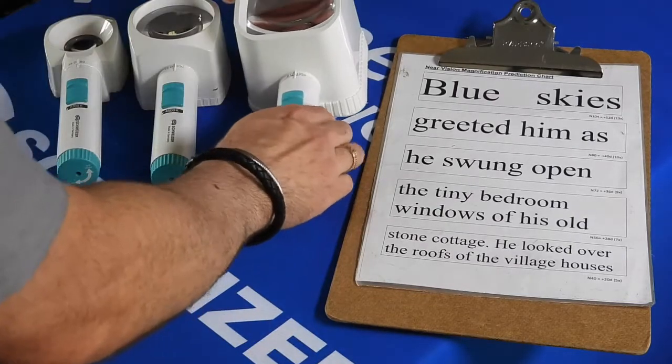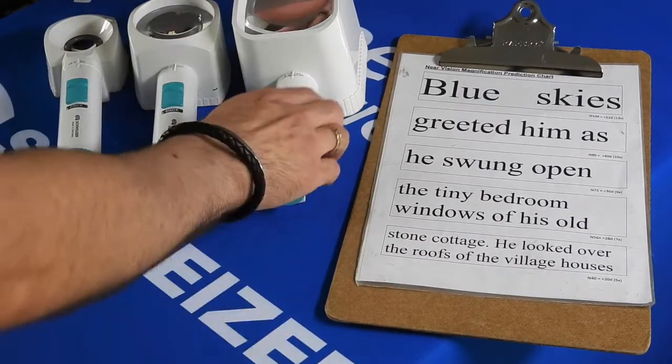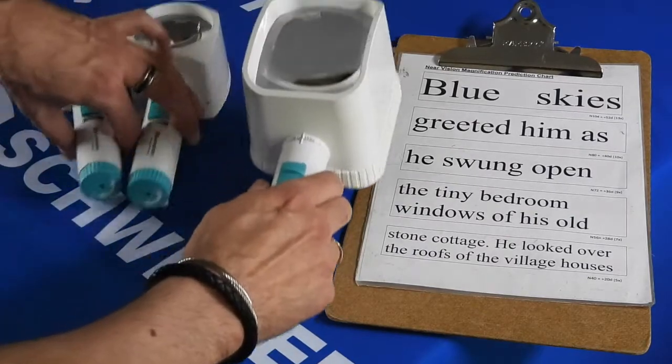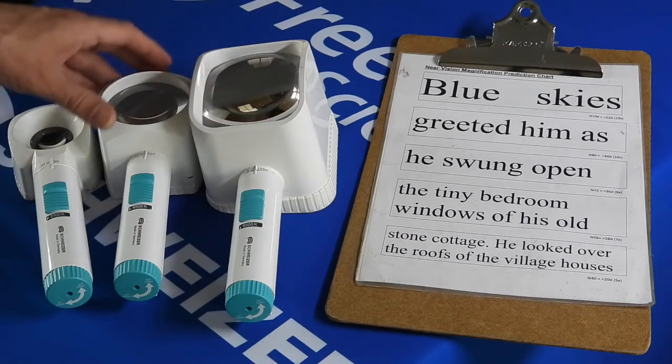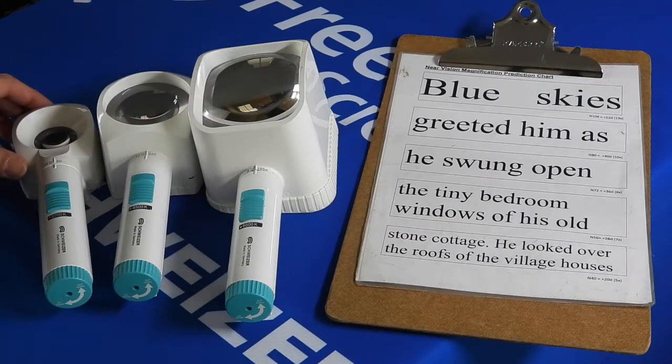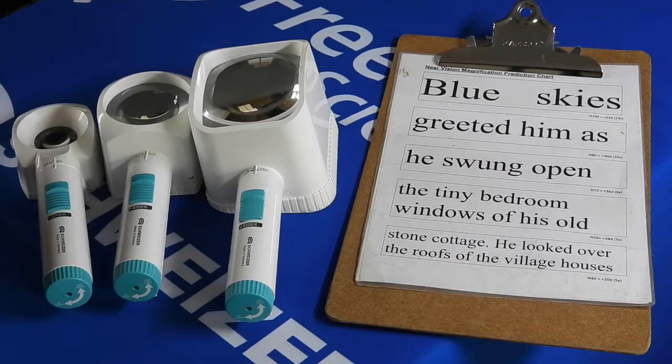This comes in various powers, so you'll see the three magnifiers on display. One has a very large optical lens, one medium, and one smaller. Like our hand magnifiers from the hand magnifier video, it is very important to get the correct working distance from your reading material.